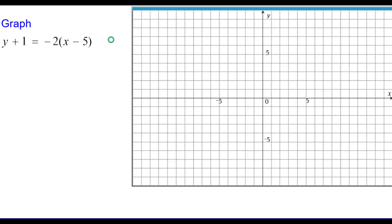Let's graph y plus 1 equals negative 2 times the quantity of x minus 5. First, the equation must be rewritten in point-slope form.